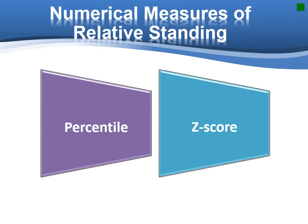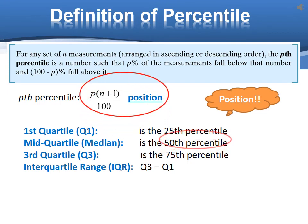Another new definition is percentile. That is, for any set of n numbers, the pth percentile is a number such that p percent of the measurements fall below that number, and 100 minus p percent fall above it. Therefore, it's about the position. You can find out this position by this formula. The 25th percentile we call the first quartile, q1. The 50th percentile is the median. And the 75th percentile we call the third quartile, q3.